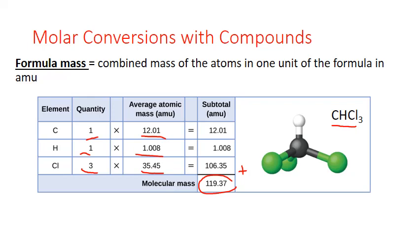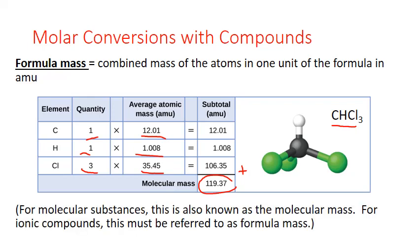For an ionic compound, that formula actually only represents the smallest formula unit for that large crystal lattice, not a molecule. So for molecular substances, we can call it molecular mass, but for ionic compounds, this has to be referred to as formula mass.